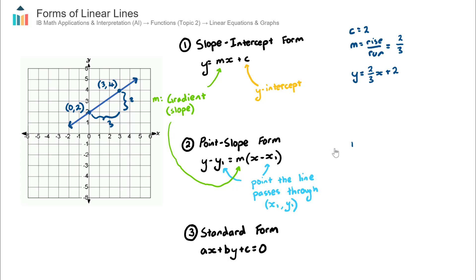I know the gradient is the same: 2/3. Now I need a point that the line passes through, and I know it passes through the coordinate (3, 4). So I'm going to use this coordinate, labelled as x₁, y₁ — that's simply a coordinate with an x-value and a y-value, and we call it x₁, y₁.